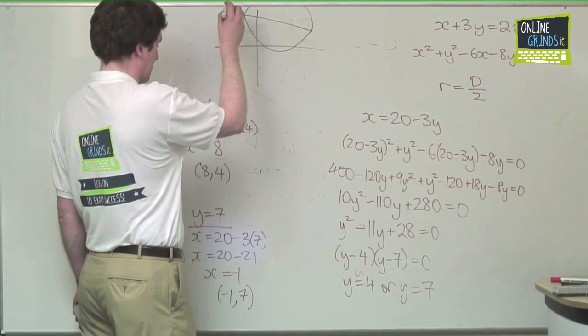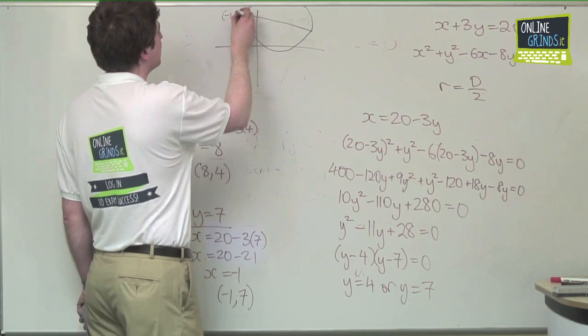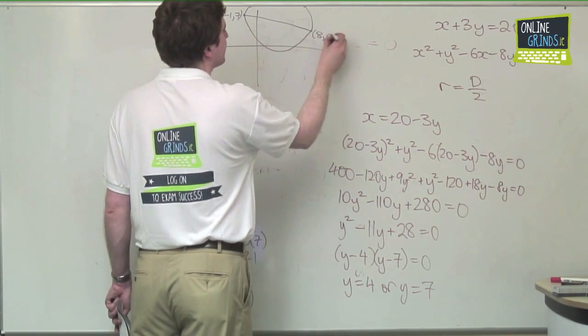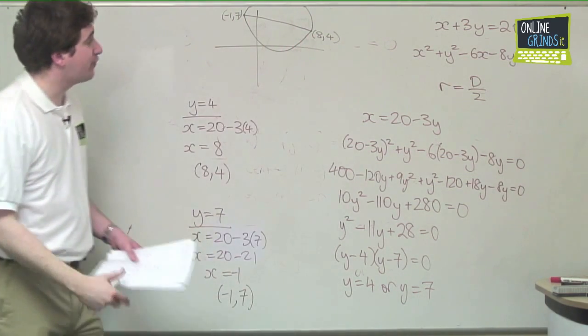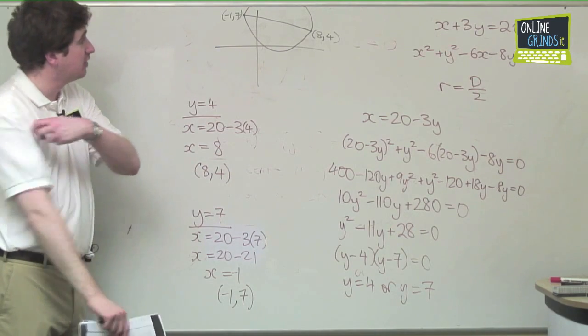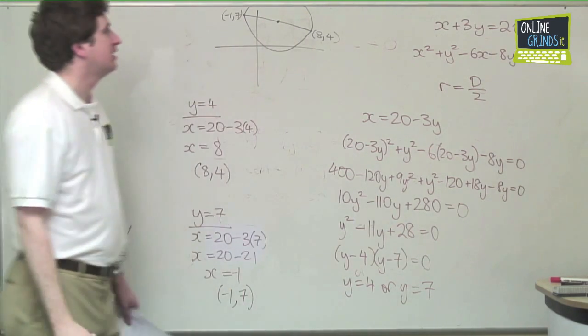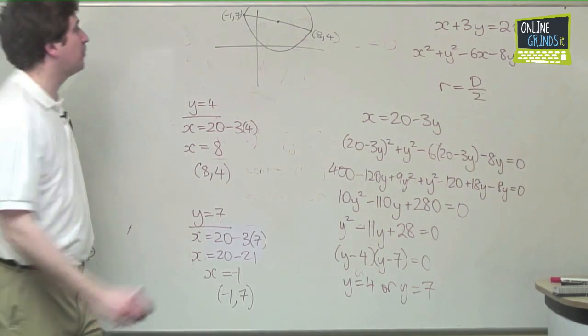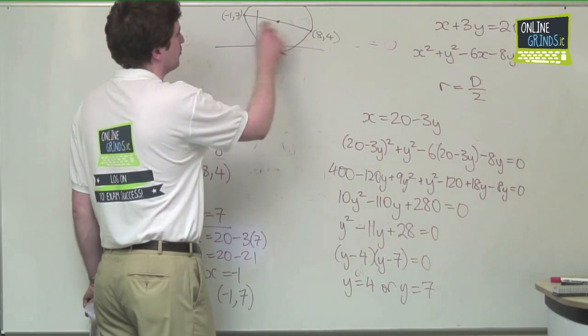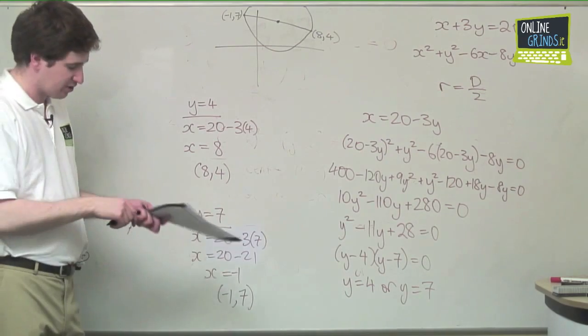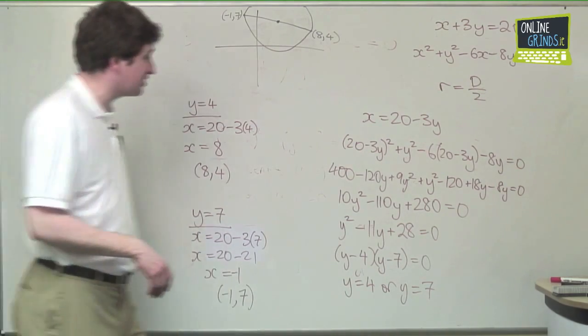That there is minus 1, 7. That there is 8, 4. And now, to find the equation of that circle, we find first of all the midpoint of those two points. That's the easy bit. And then we find the distance between those two points. And we know that the radius is half that distance.